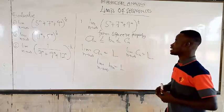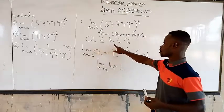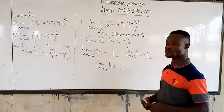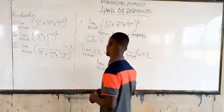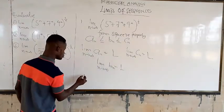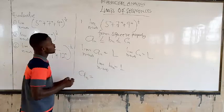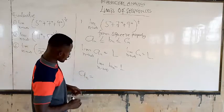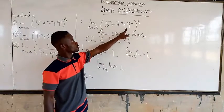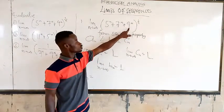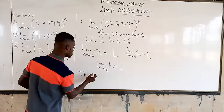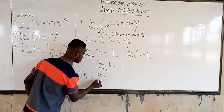We start by defining our a_n, our b_n, and our c_n. So let's look at how we are going to define that. The a_n is going to be the greatest value here. What is the greatest value? You should be able to know that it's 9 — now it's to the power of n. So that will be the greatest value, now to the power of n. Then you break the power.